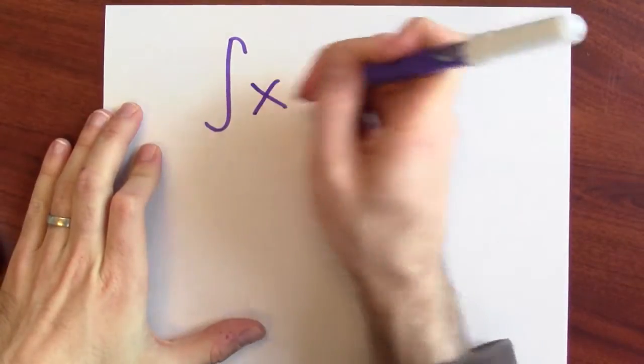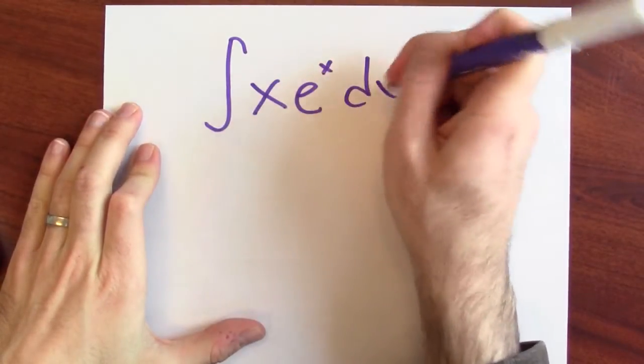Well, let's try it. For example, let's find an anti-derivative of x times e to the x.